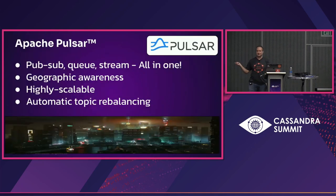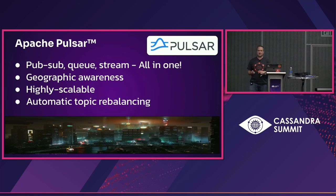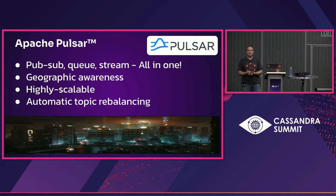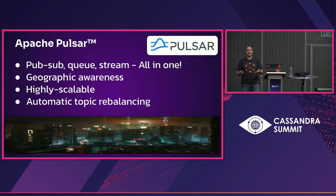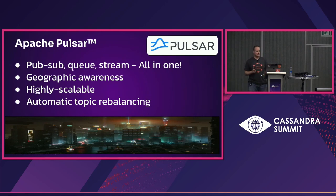Apache Pulsar gives you publish-subscribe, message queue, and event streaming all in one. The cool thing about Pulsar is that it's geographically aware like Cassandra, making it a natural fit to use with Cassandra. Also highly scalable. I didn't work on the Kafka team at Target, but I know we had all kinds of issues going multi-data-center with Kafka, and a lot of those headaches Pulsar just takes care of. Highly recommend it if you haven't checked that out.